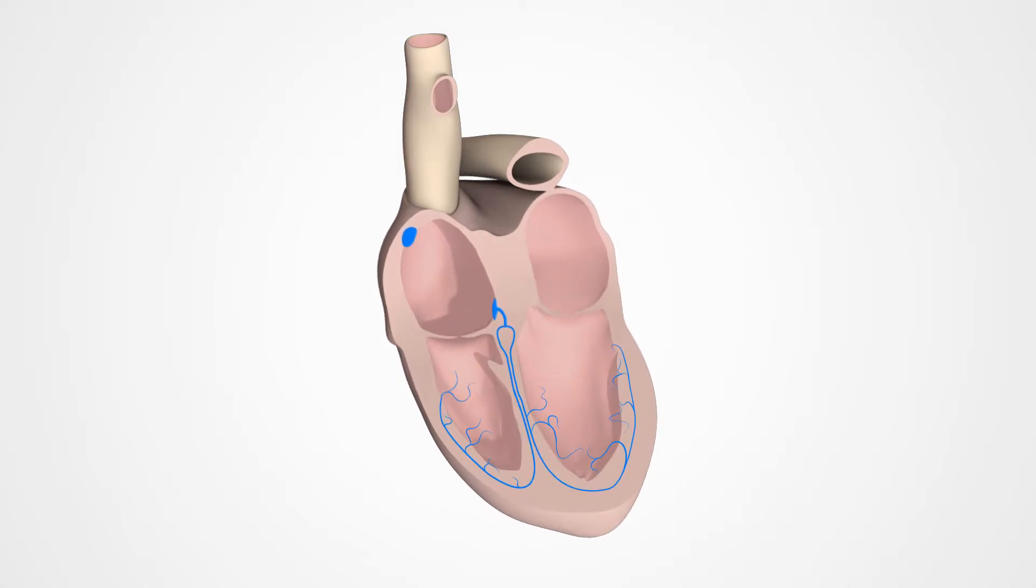The heart's main pacemaker is found in the right atrium. The sinus node sends out 60 to 80 electrical signals per minute when the body is at rest. This results in a normal heartbeat, the sinus rhythm.